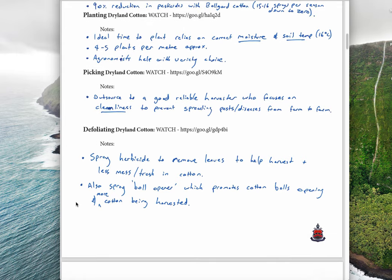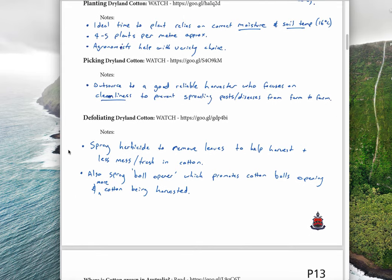In terms of harvesting, before you harvest, you spray the crop with a herbicide, and this kills the leaves. The leaves die and fall off rather than getting in the cotton. So when the cotton is being picked by the harvester, if you don't have leaves there, it removes the chance of getting leaf matter rubbish into the cotton harvest.